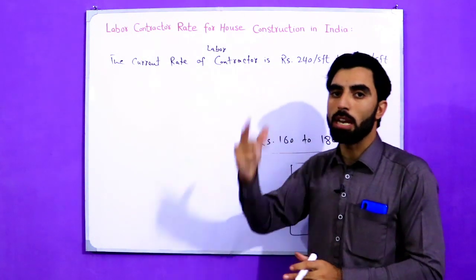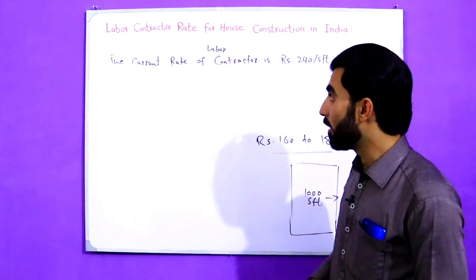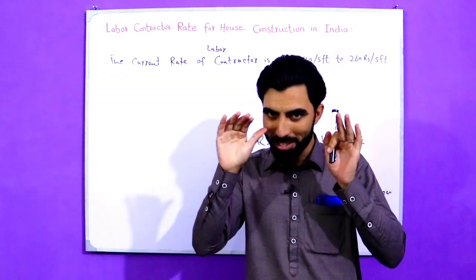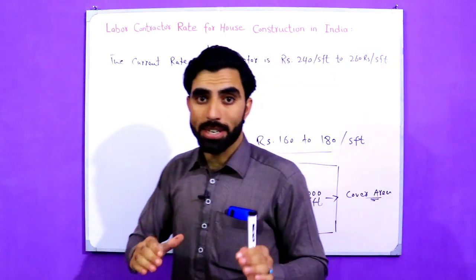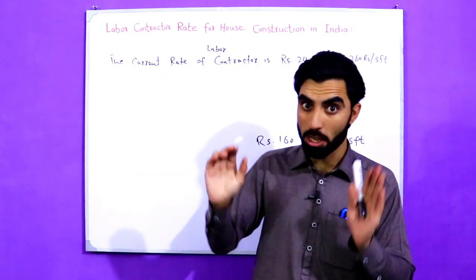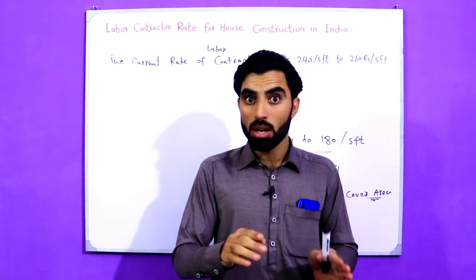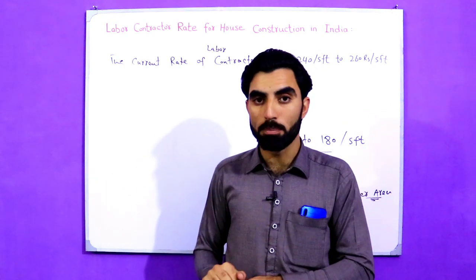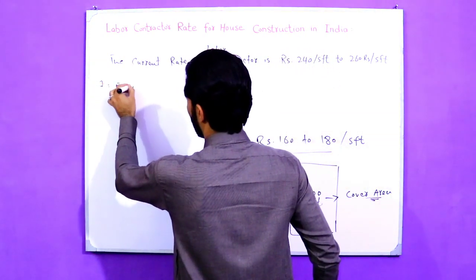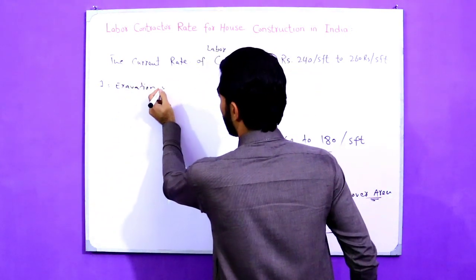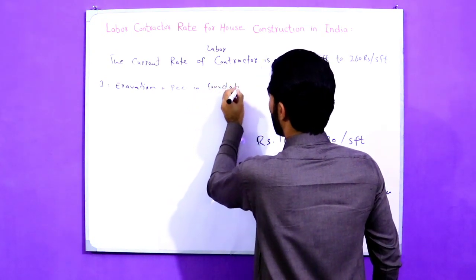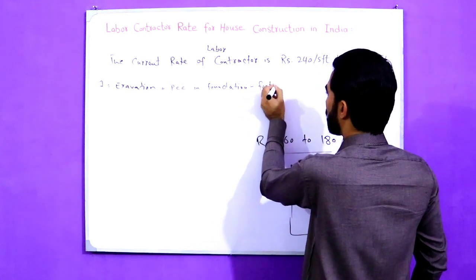When you multiply the area by the rate, you get the total amount for the labor contractor. At this rate of 240 rupees per square feet, once the architect visits your site and completes the layout, they will start from excavation all the way to finishing. This includes excavation, PCC, DPC, foundation footings, and columns.